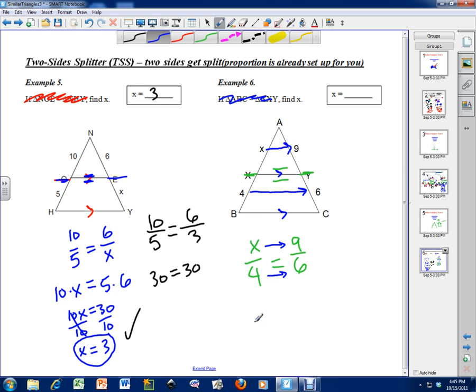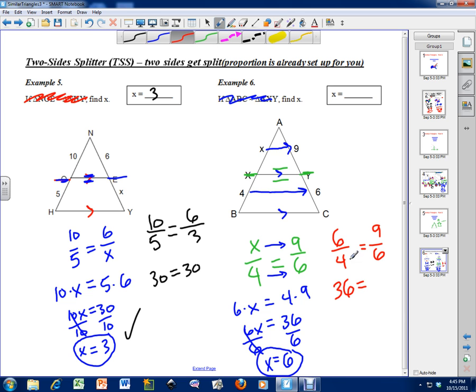Cross multiply here. I have 6 times x and then I have 4 times 9, which becomes 6x equals 36. And if I divide both sides by 6, I get x equals 6. So let's double check to make sure that this is the correct answer. This x is now 6 over 4 equals 9 over 6. I cross multiply. 6 times 6 is 36. 4 times 9 is 36 as well. So this is a true statement here. So x is equal to 6.